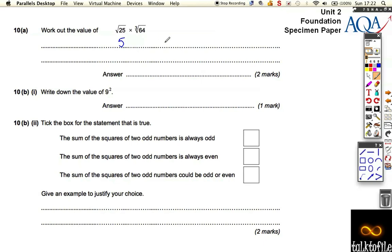5 squared gets us to 25. We multiply that by the cube root of 64. Something times something times itself again has got to equal 64, so the cube root must be 4 because 4 times 4 is 16 and that times 4 is 64.